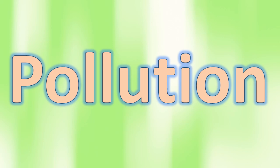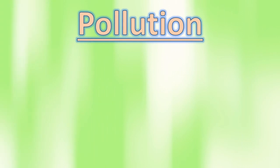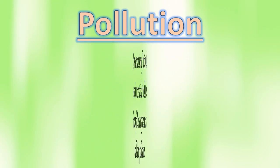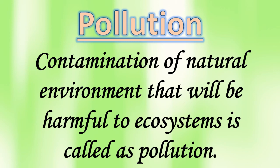Pollution — let's have a look at the definition. Contamination of natural environment that is harmful to ecosystems is called pollution. Contamination means mixing impure substances into the natural environment. Ecosystem means a group of living organisms that live and interact with each other in the environment. When this contamination happens, it leads to pollution, and pollution is of various types.